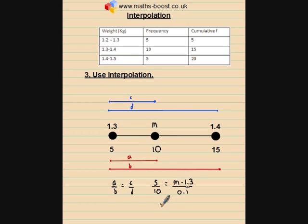And then if I multiply both sides by 0.1, so that would be a half times 0.1, would give me 0.05 equals M minus 1.3. And if I add 1.3 to both sides, I'll find that M is equal to 1.35.